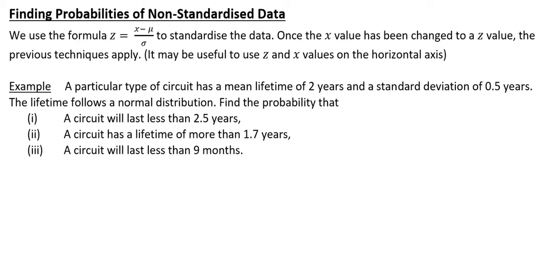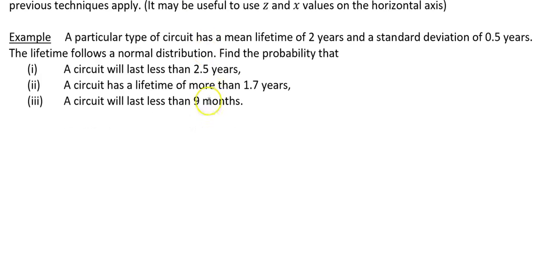In this video we're going to look at how we can find probabilities of non-standardized data. This is when you have real-life data, maybe X values, and you have to convert them to Z values because that's what the tables are. The tables are Z values which have a mean of 0 and a standard deviation of 1. We're going to look at this example now.